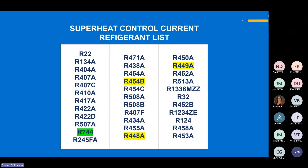We have updated the refrigerant list on the Kelvin 2 series to include some of the newer refrigerants coming into use, such as R-454B, 448, and 449A. CO2 continues to be an option on the Kelvin 2 superheat control as well.